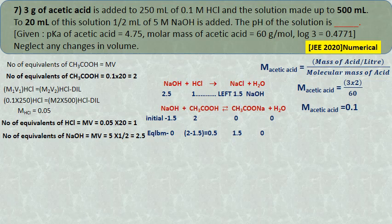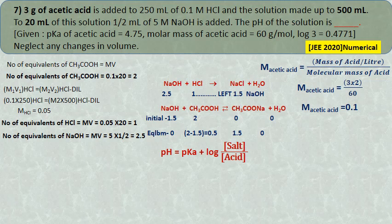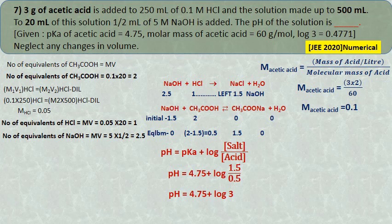We have 0.5 equivalents of acetic acid and 1.5 equivalents of sodium acetate—weak acid and its salt—forming a buffer. pH = pKa + log(salt/acid) = 4.74 + log(1.5/0.5) = 4.74 + log 3. Substituting log 3 given: pH = 5.2271.